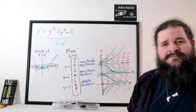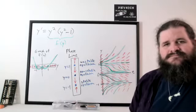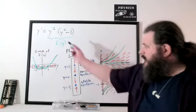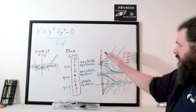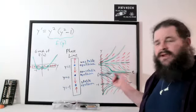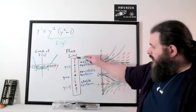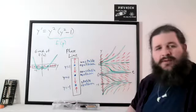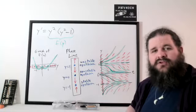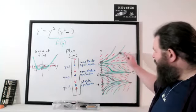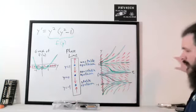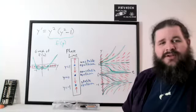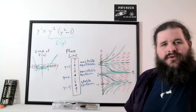That's the general idea of using the graph of f(y) and the phase line to draw a direction field and sketch curves. Even without drawing the full direction field, you can find the equilibrium values and determine their type — stable, unstable, or semi-stable — using the phase line or the derivative of f(y). That's usually enough information to predict the long-term behavior of all solutions.